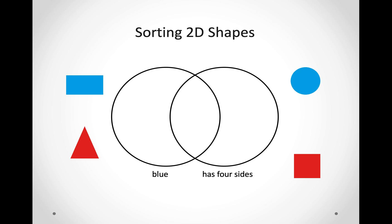Now, we are going to do it with circles that overlap — that means they go over each other. Here we are going to have all the things that are blue, and on this side, we are going to have all the shapes that have four sides. And here in the middle where the circles go over each other, we are going to put the shapes that have four sides and are blue. Let us try it out.